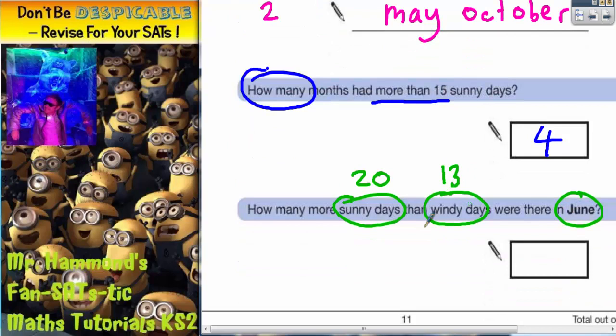Now we're in a position to work it out. So how many more sunny days than windy days is there? Well 20 take away 13, nothing take away 3, borrow 1 because you can't do it. 10 take away 3 is 7. And 1 take away 1, you can do it, 0. So the final answer is 7. 20 take away 13 is 7. So there's your answers.